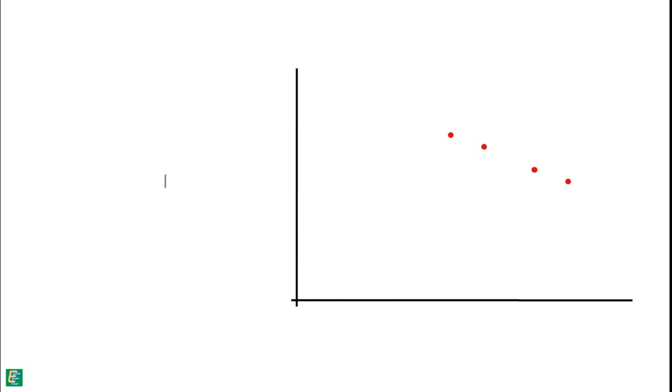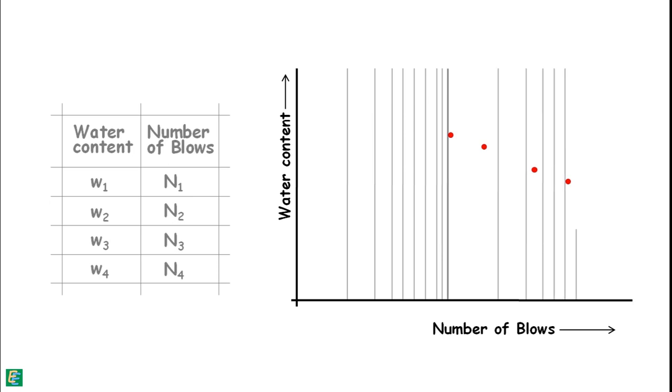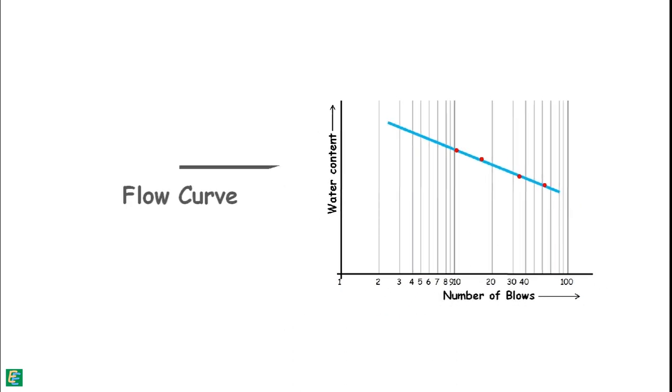We plot a graph between these experimentally obtained numbers of blows and their corresponding water content. Numbers of blows are plotted on log scale. A best fitting curve is drawn through the experimental points. And we observe the graph is approximately a straight line. This curve is known as flow curve of soil.